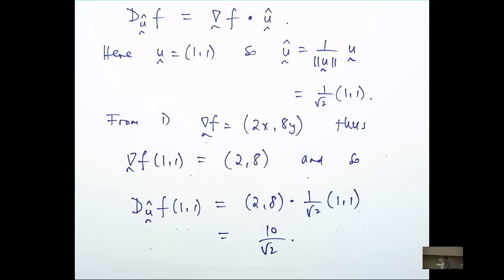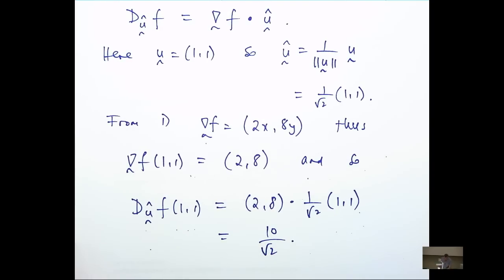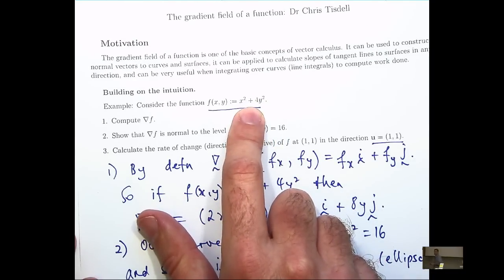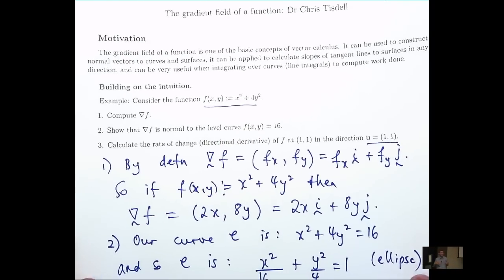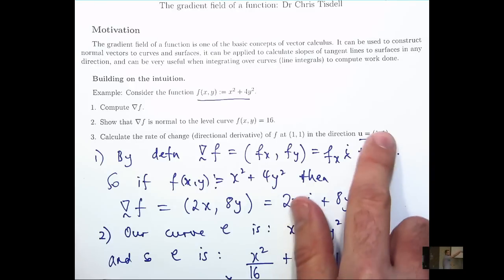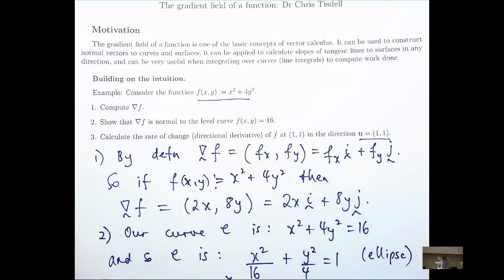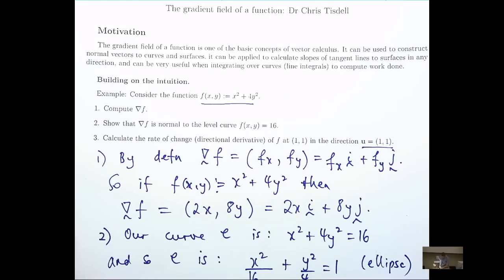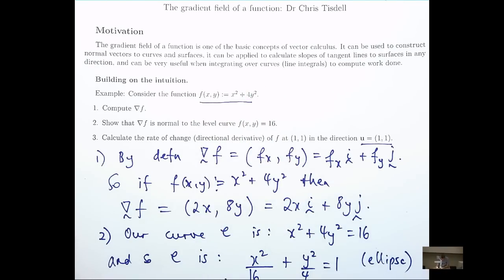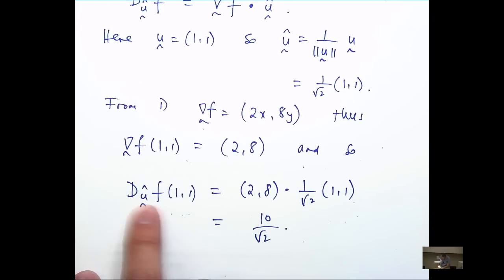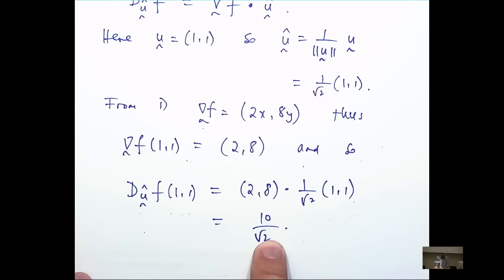So we've computed an answer, but what is it? Well, if you imagine the surface associated with this function, it's going to be a paraboloid. And you can form a vertical plane containing this vector and the point (1,1,5). That vertical plane will intersect with this surface and you'll get a curve. Now that curve will have a tangent line associated with it. What this value is, the directional derivative, is the slope of that particular tangent line.